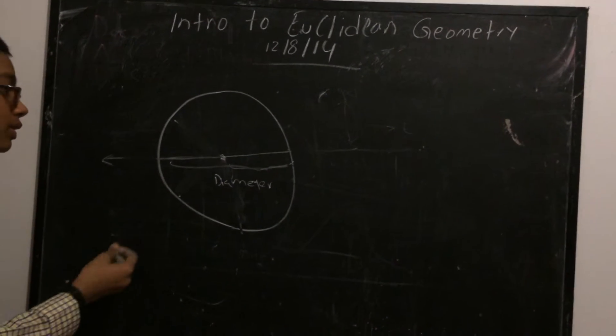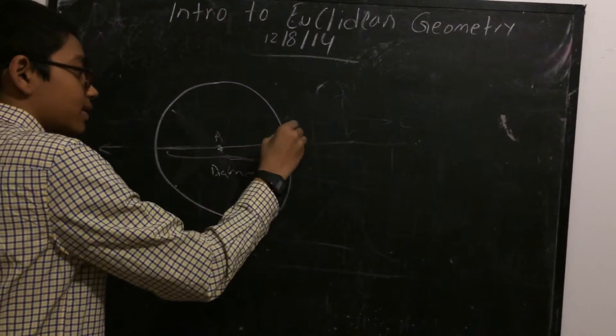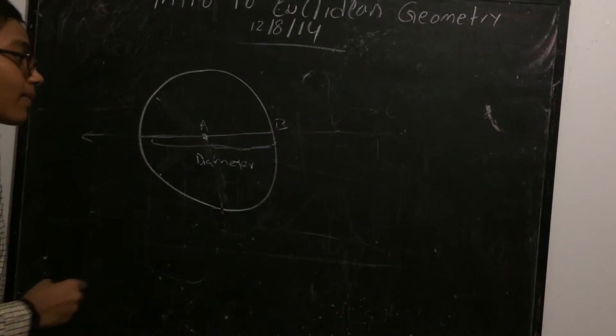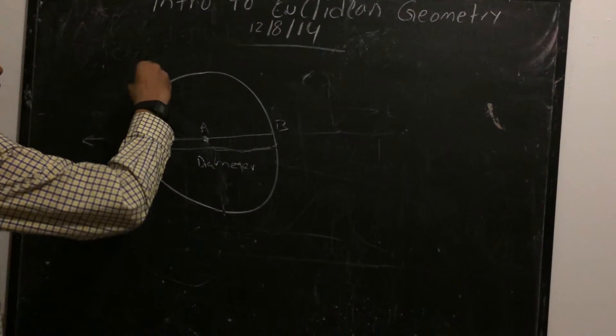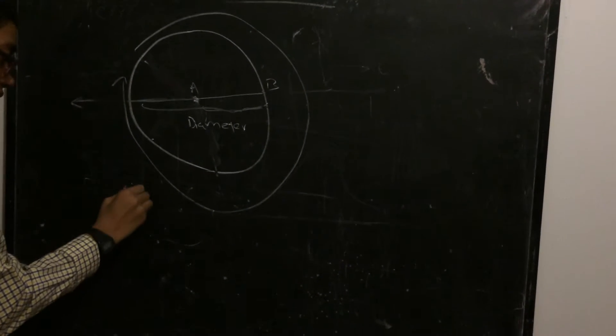So, you could label the endpoint as A and label this B, and the distance around the circle, we call that the circumference.